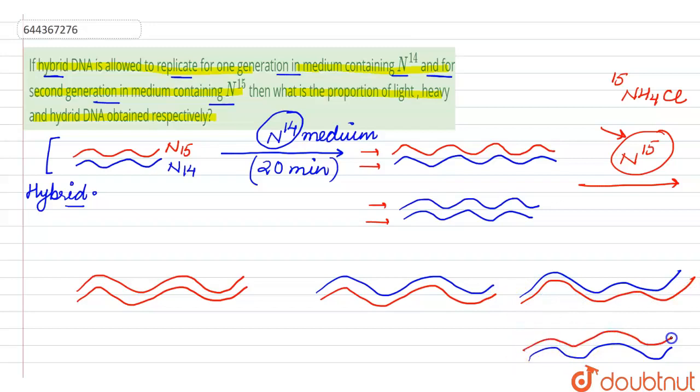Now we need to calculate, now this is the generation. So after more 20 minutes, that means total amount of 40 minutes, this is what four molecules which we are going to get will be of this type. So it says what is the proportion of the light, light means N14 to N14. We can see that none of them are N14 by N14.